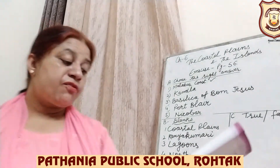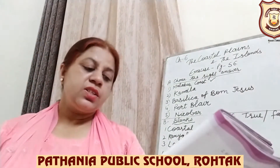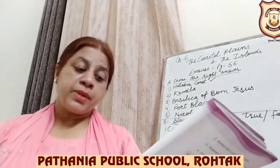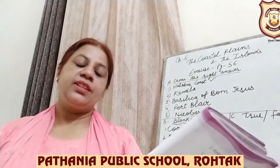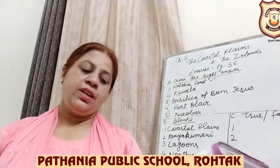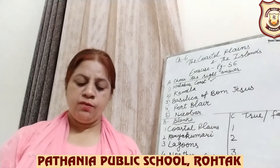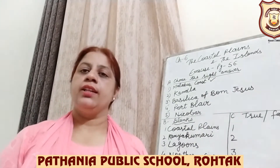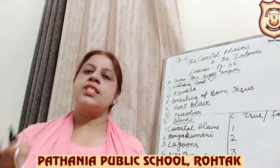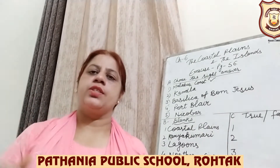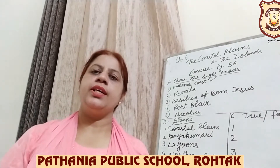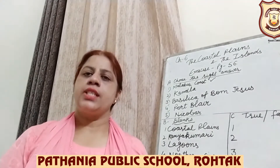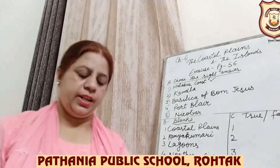Number 5: Freedom fighters were imprisoned in the dash at Port Blair. The answer is 'Cellular Jail.' So you have to write 'Cellular Jail.'